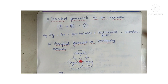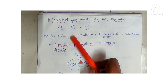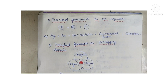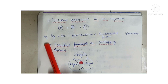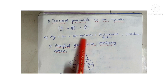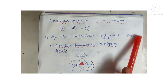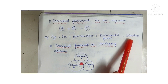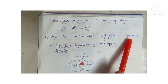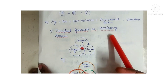Conceptual framework as an equation: you have A + B = C, meaning many factors lead to one outcome. For example, age + sex + poor sanitation + environmental factors all have an impact on the condition diarrhea. So multiple factors lead to a single outcome.